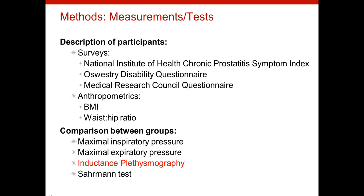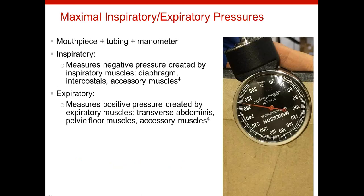As strength measurements for the diaphragm and transverse abdominus, we used maximal inspiratory and expiratory pressures. We made our own spirometer using a mouthpiece, tubing, and a manometer taken from a blood pressure cuff. Age-based lower limits of normal have been established for both of these measures.